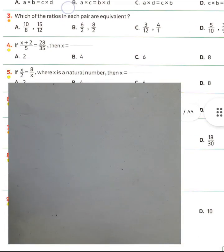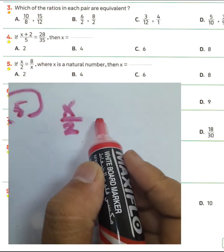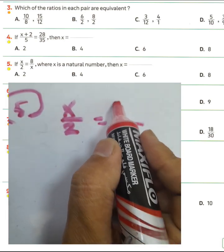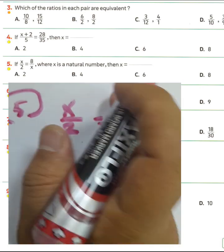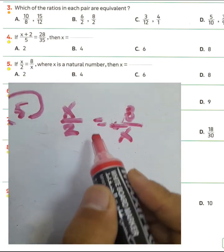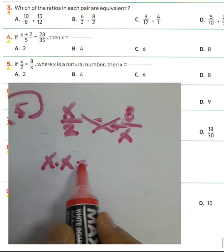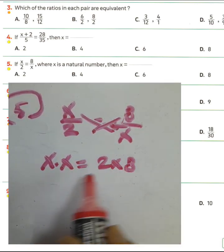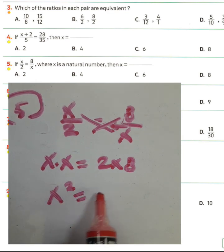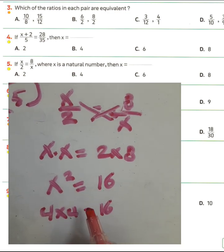Question number five: if x over 2 is equivalent to 8 over 4, you want to find the value of x. We can use cross multiplication: x times 4 equals 2 times 8, so x times 4 equals 16. We know 4 times 4 equals 16, then the value of x equals 4.